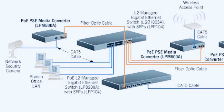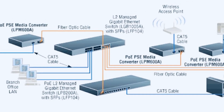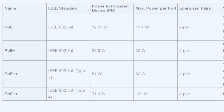PoE types and power levels: previous PoE technology includes PoE Type 1, also called IEEE 802.3af, and PoE Type 2, better known as IEEE 802.3at or PoE Plus. Both utilize two pairs of the Ethernet cable. Type 1 supports a maximum of 15.4 watts per port and Type 2 supports a maximum of 30 watts per port.